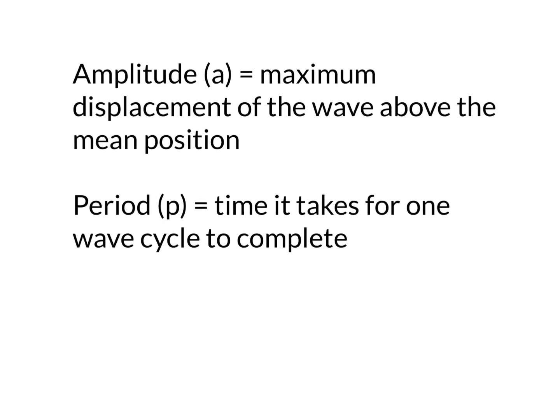So the first two terms we're going to look at is the amplitude, we'll represent that by a letter a, or lowercase a. It's the maximum displacement of the wave above the mean position, so basically from the middle of the wave to the peak of the wave is the amplitude. And the period is the time it takes for one wave to complete. So basically from when it starts, and most of it will be when x is zero or the beginning of time, and for it to complete and start again.